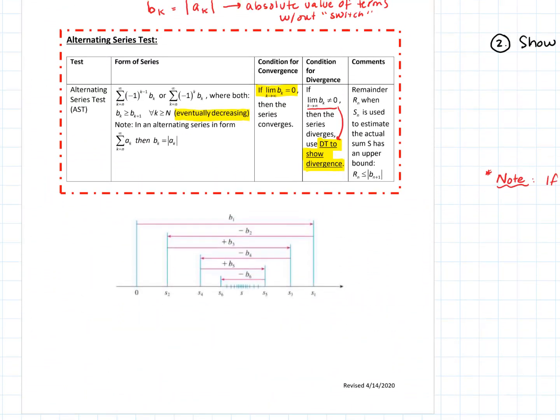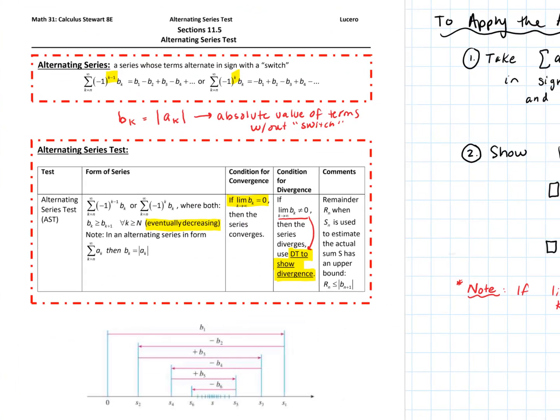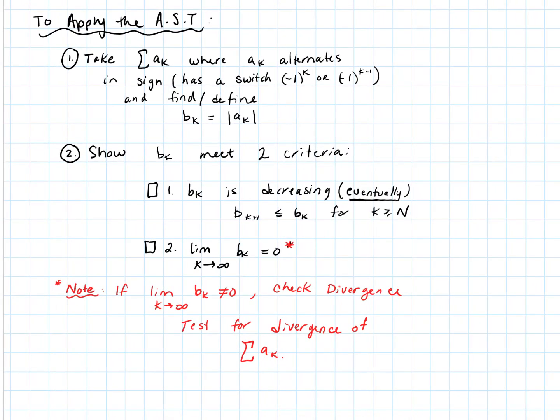Those are the two examples to start off the alternating series section. To summarize: take your series, remove the switch using the absolute value, then examine what happens. If that sequence of terms is both decreasing and has a limit of zero, the series converges by the alternating series test. If the limit does not equal zero, go to the divergence test. We'll come back and look at the remainder estimates in the second video.